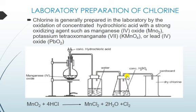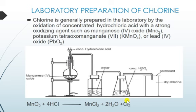The gas is then dried by concentrated sulfuric acid and collected by upward displacement of air, or by downward delivery, in a gas jar. A cardboard is used to cover the gas jar. So the dry chlorine gas is collected by upward displacement of air or by downward delivery.